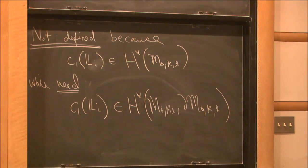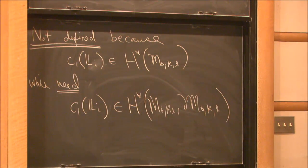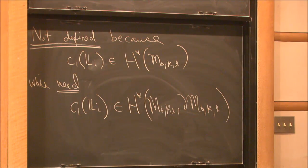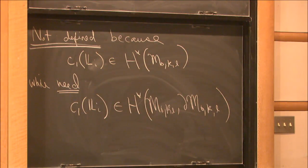The trouble is we don't know any way to naturally promote the first Chern class of these tautological line bundles to live in relative cohomology.